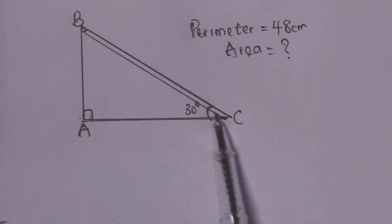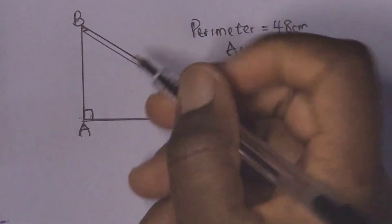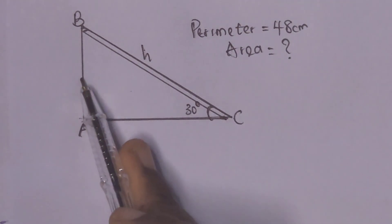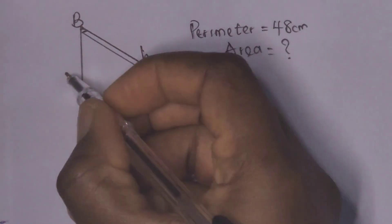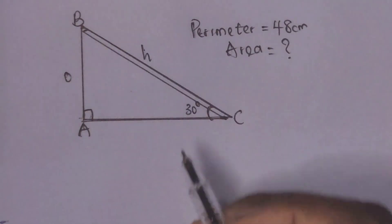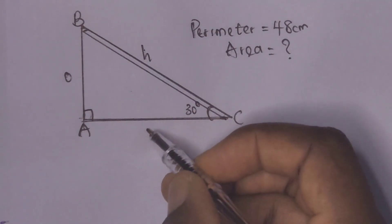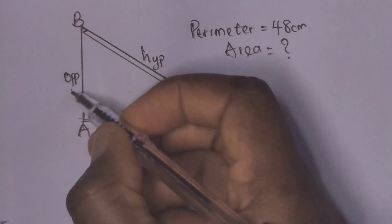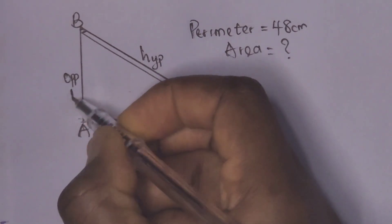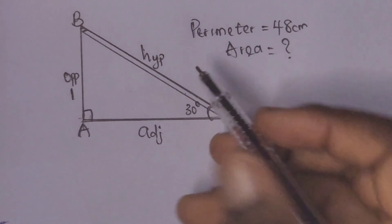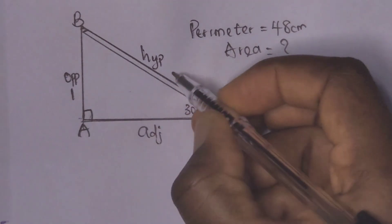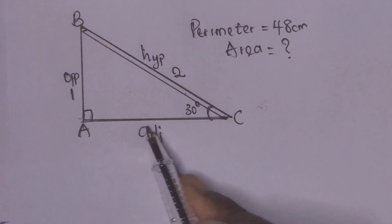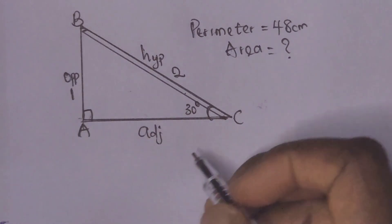The longest side of the triangle is the hypotenuse, this side is the opposite, and we have the adjacent here. If we have the opposite to be 1, it means the hypotenuse will be 2 times the opposite, which is 2, and then our adjacent will be root 3.